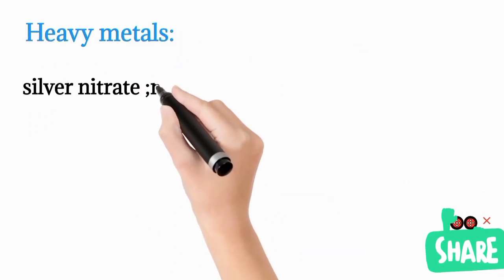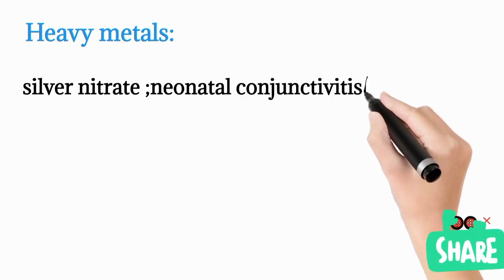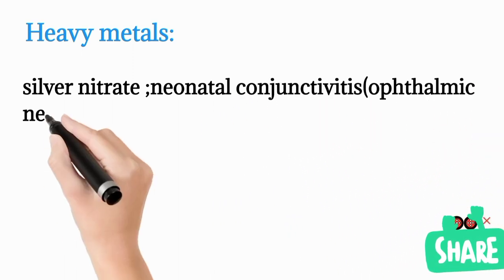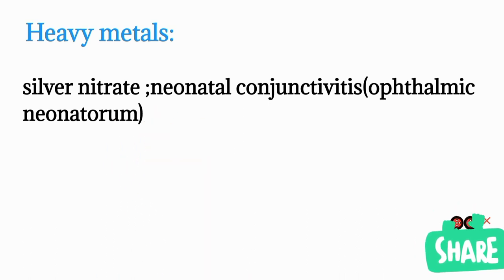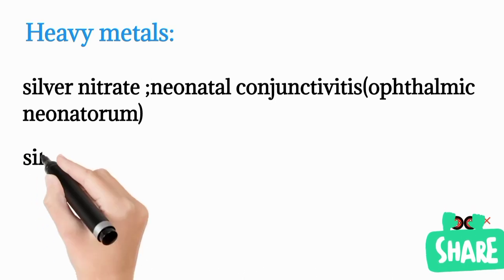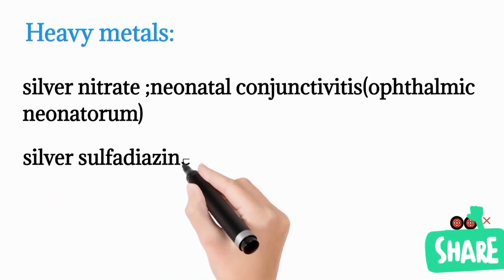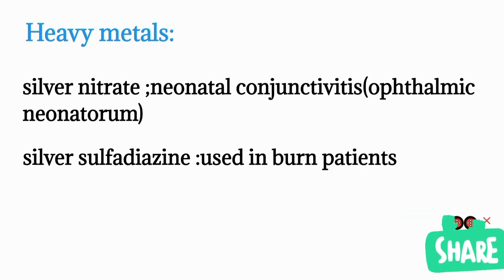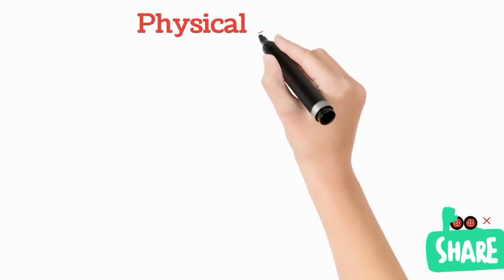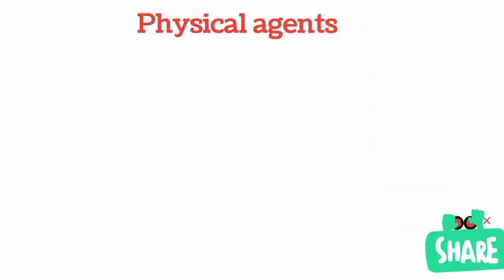Some heavy metals have important uses. Silver nitrate can be used to fight neonatal conjunctivitis, also known as ophthalmia neonatorum — a gonococcal conjunctivitis acquired after birth. Silver sulfadiazine is another heavy metal compound commonly used in burn patients as a disinfectant.